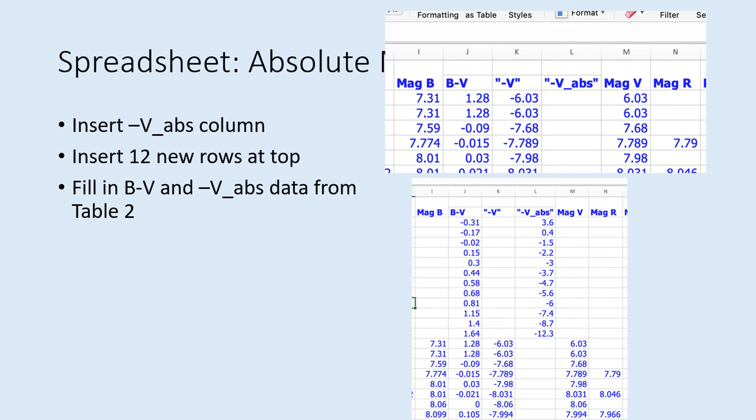The absolute magnitude data is a set of standard values astronomers have observed for main sequence stars of each color. By adding these to the table, it will create a separate set of points, just for the absolute magnitudes on your HR diagram. When you create the diagram, you should see these points in a different color than the rest, and we'll be able to use this to find the distance to the cluster.